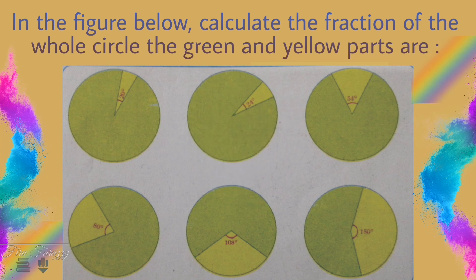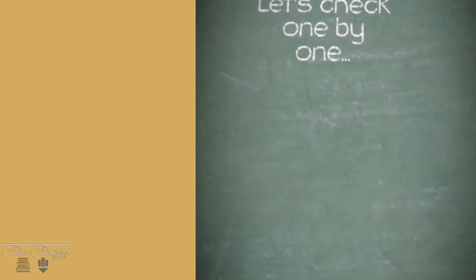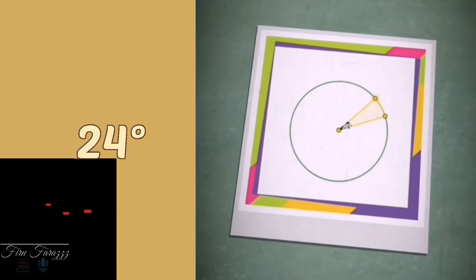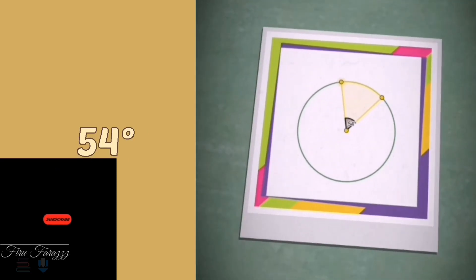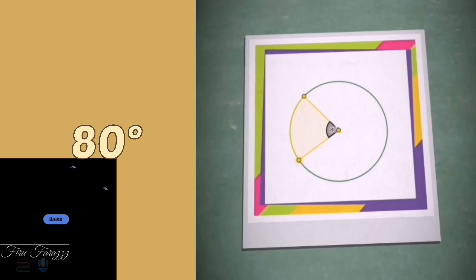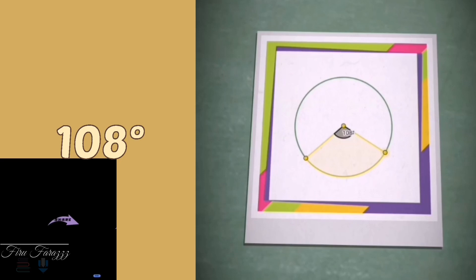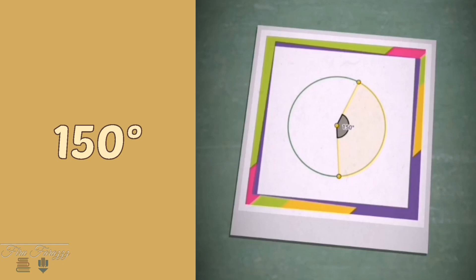Here is our question: in the figure below, calculate the fraction of the whole circle the green and yellow parts are. We have to find out the fraction of both green and yellow parts of each figure. Let's check one by one — the figures have angles of 20°, 24°, 54°, 80°, 108°, and 150°.